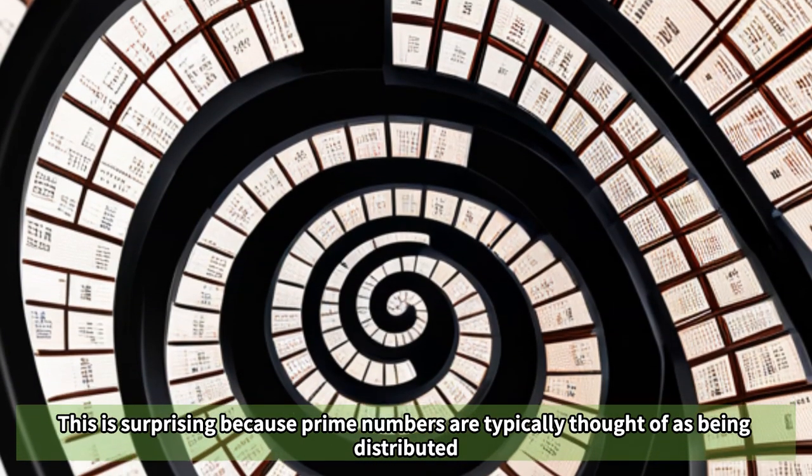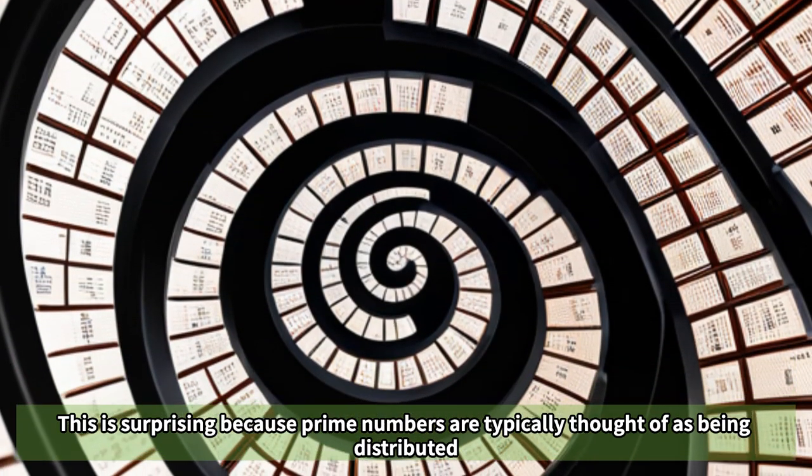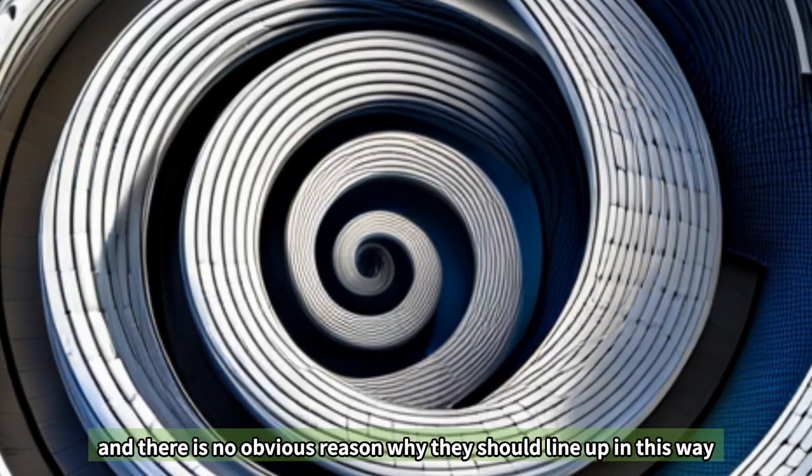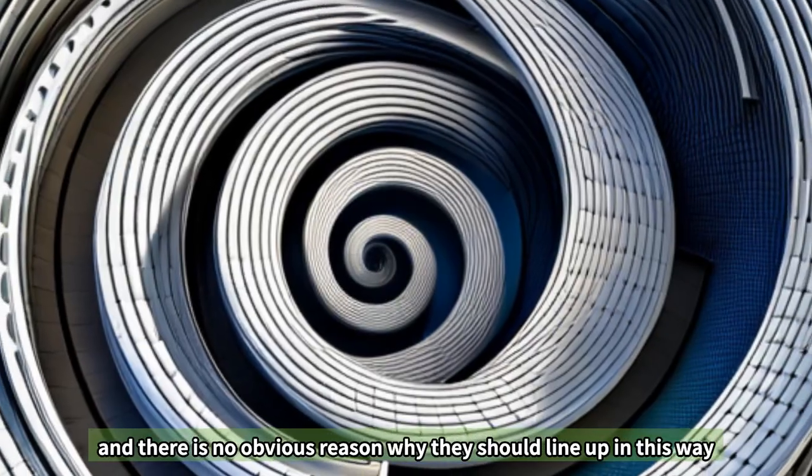This is surprising because prime numbers are typically thought of as being distributed fairly randomly among the integers, and there is no obvious reason why they should line up in this way.